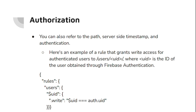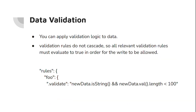You can also refer to the path, server-side timestamp, and authentication. Here we have an example of a rule that grants write access for authenticated users. In the rules you have 'users' and inside users you specify a uid for a particular user — you replace uid with the Firebase authentication ID of that user. Then you give the rule .write where uid equals auth.uid, so if the user ID equals the authenticated user ID, this rule is going to be enforced.